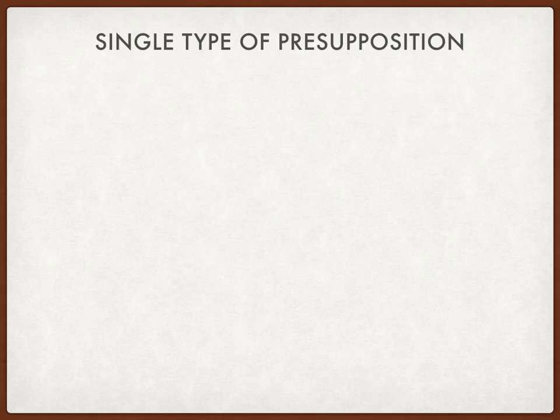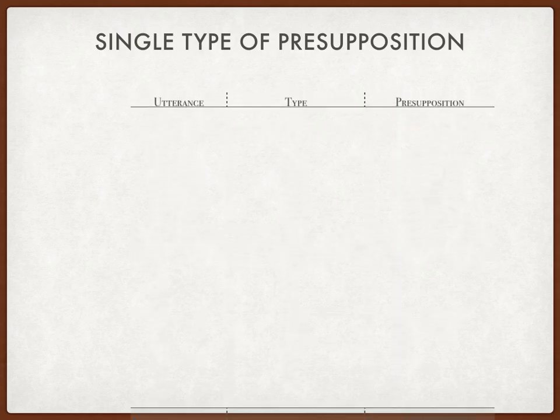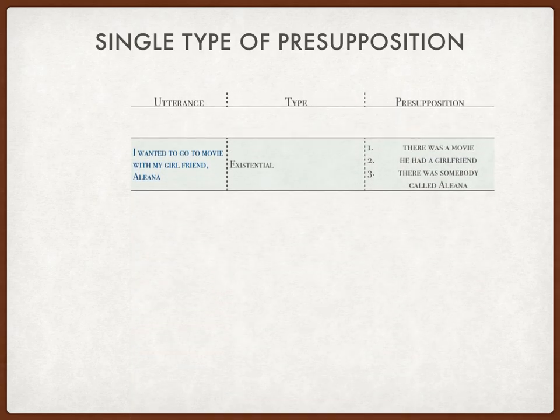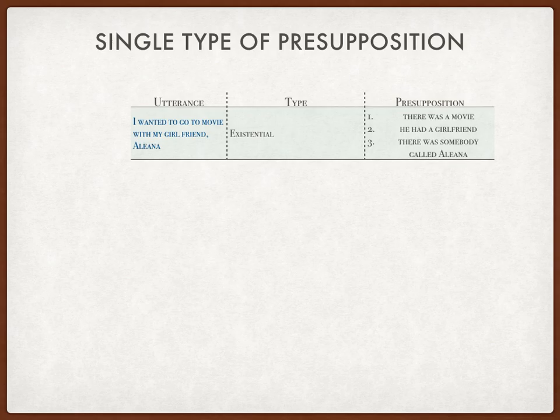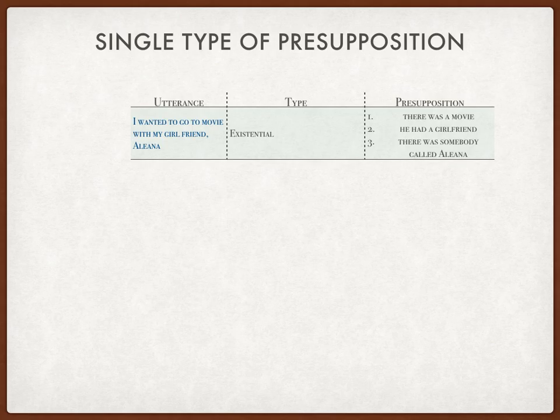Let's have a look at the first example. The first sentence is: 'I wanted to go to a movie with my girlfriend Aliana.' From this sentence, the type of presupposition we can find is only existential, because we can focus on the noun phrases and possessive objects that exist: we have 'movie,' 'my girlfriend,' and 'Aliana.'